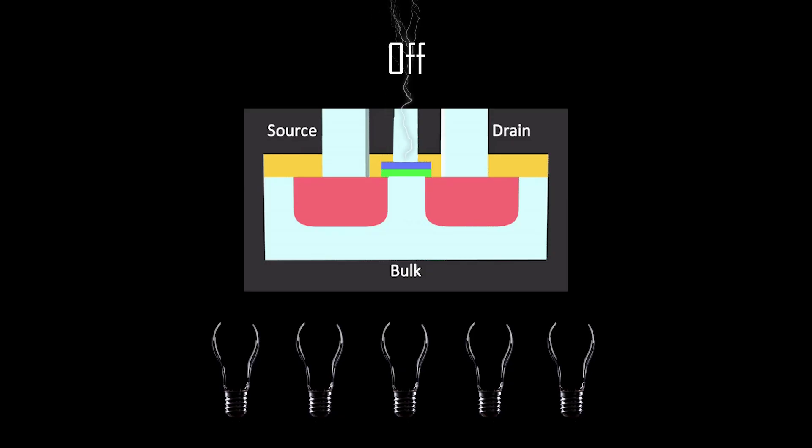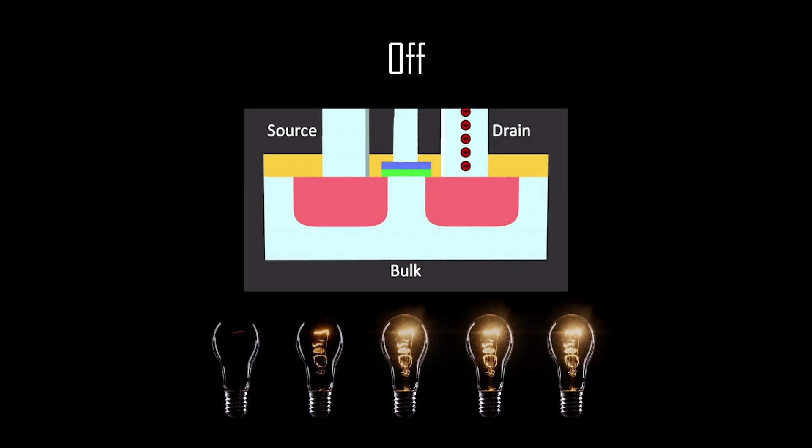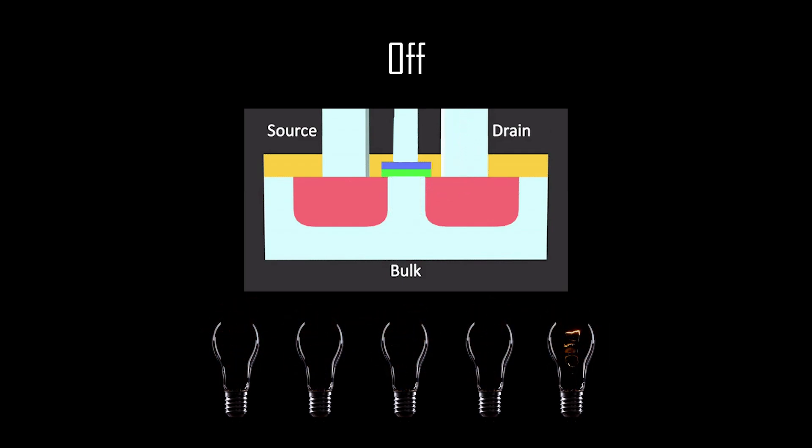When a voltage is applied to the gate electrode, depending on its polarity, we can create electric fields that either attract or repel electrons in the channel. This changes the conductivity of the channel, which in turn controls the flow of current between the source and drain electrodes. By varying the voltage applied to the gate, the MOSFET can be used as switches or amplifiers.